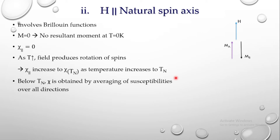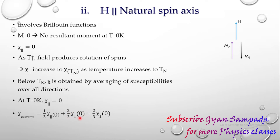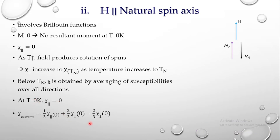Below Tn, the susceptibility of antiferromagnetic polycrystalline material is obtained by averaging the susceptibilities over all directions — considering both the parallel and perpendicular components. At T = 0 K, χ∥ = 0, and the total susceptibility of a polycrystalline material is: χ_poly = (1/3)·χ∥(0) + (2/3)·χ⊥(0). Since χ∥ = 0 at T = 0 K, this simplifies to χ_poly = (2/3)·χ⊥(0).